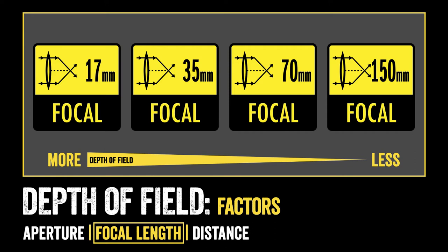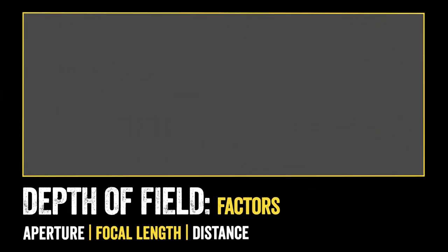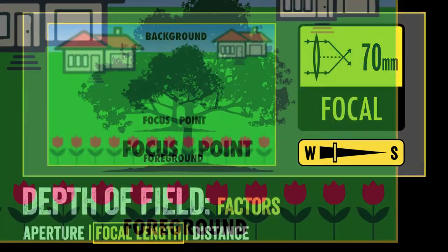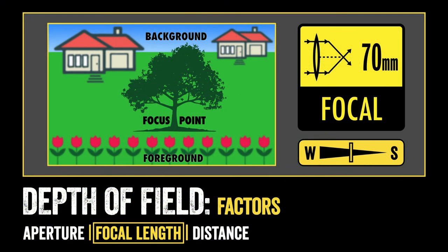Let's take a look at how that works with some visualizations. If I start with a wide angle lens — 17mm for example — I'll have a wide depth of field. I'll have my background in focus, my focal point will be in focus, and my foreground will be in focus. Now as I increase the focal length of the lens to let's say 70mm, I decrease the depth of field and start to move towards a shallow depth of field. My focal point of the large tree will remain in focus, my background will start to blur, and my foreground will start to blur.